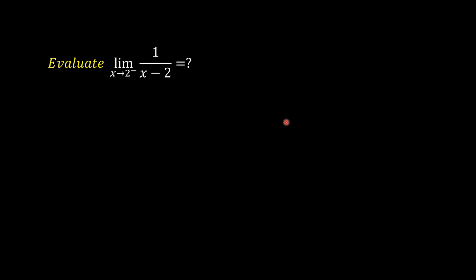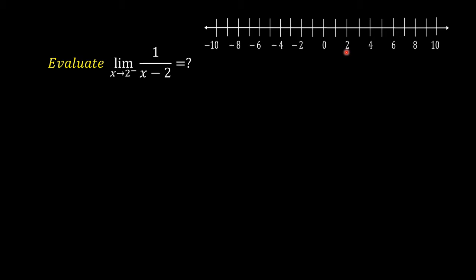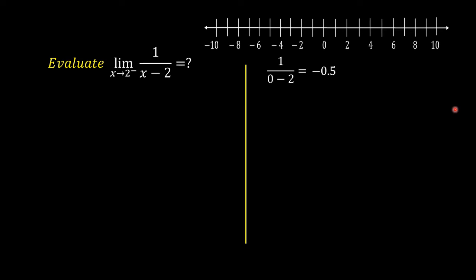Let us evaluate the limit of 1 over x minus 2 as x approaches 2 from the left. This is a number line; this is 2. All the numbers to the left of 2 are less than 2 and each of them is approaching 2 from the left. Let us replace x by some of them. Starting with 0: 1 over 0 minus 2 is equal to negative 0.5. Then 1 over 1 minus 2 is equal to negative 1. Then 1 over 1.9 minus 2 is equal to negative 10.